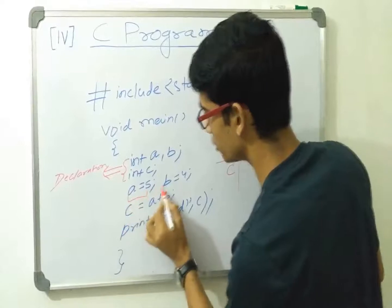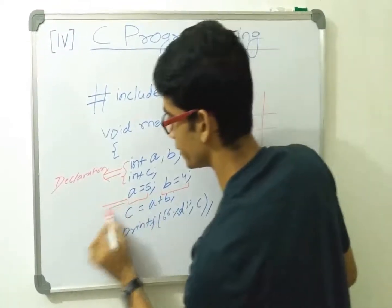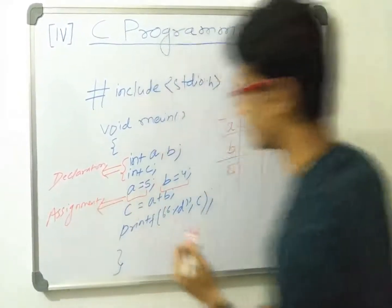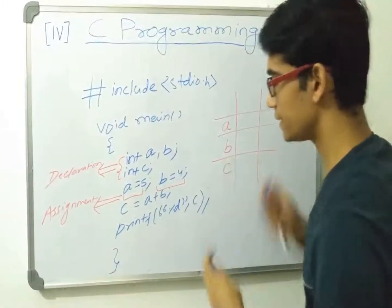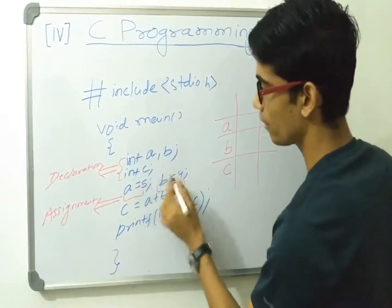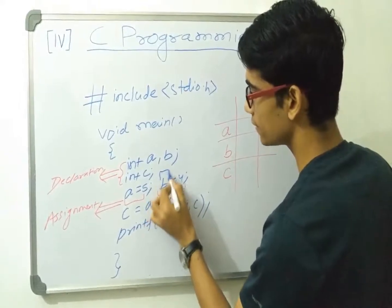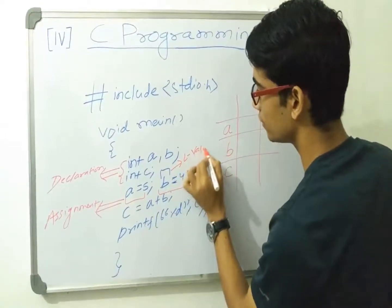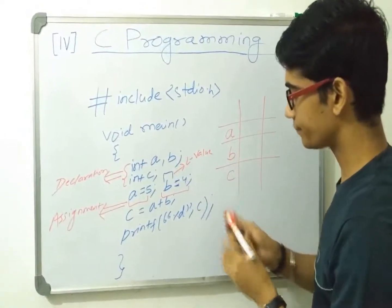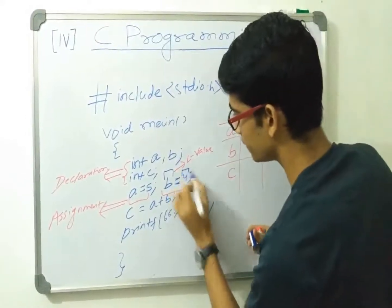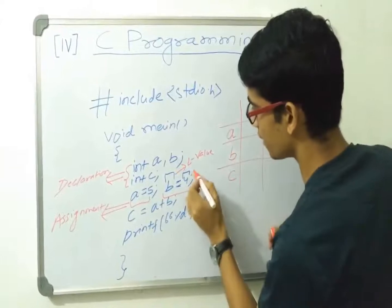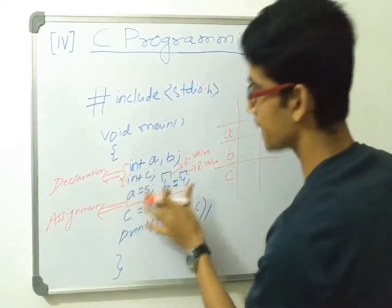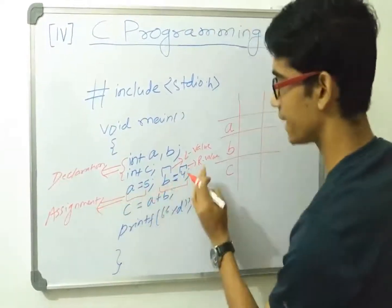The statements a = 5, b = 4, and c = a + b are all assignments. One important thing to know: the left side of the equal-to sign is called the l-value, and the right side is called the r-value. So: this is declaration, this is assignment, the left side is l-value, and the right side is r-value.